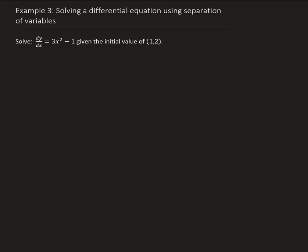So to do this first, we're going to apply a technique called separation of variables. We're going to separate the dy and dx parts, so we're going to have dy equal to (3x squared minus 1) dx.